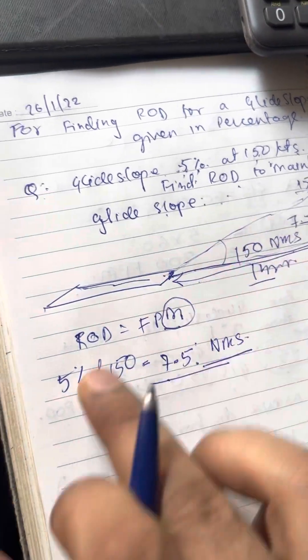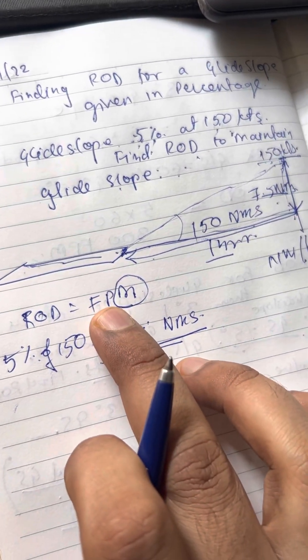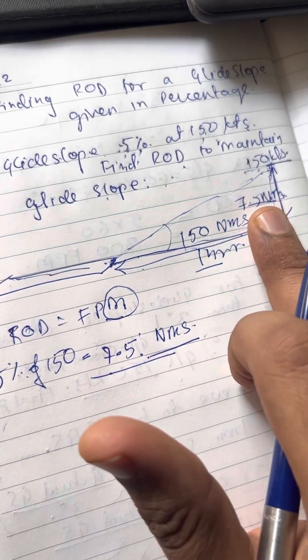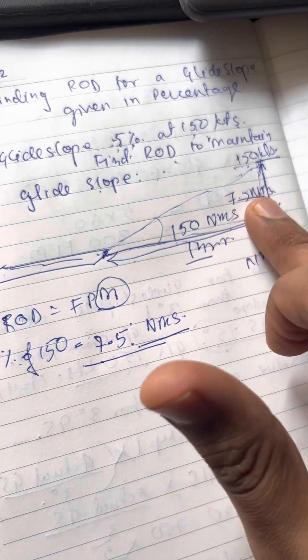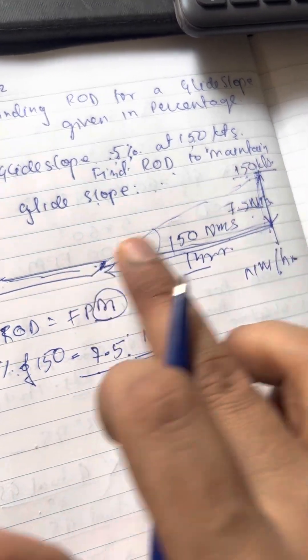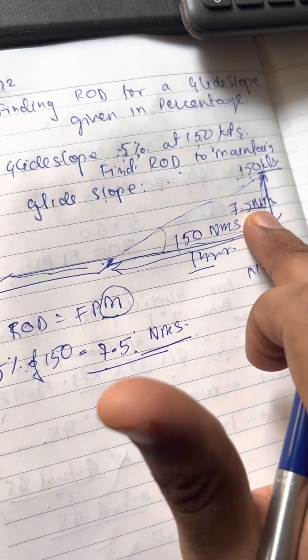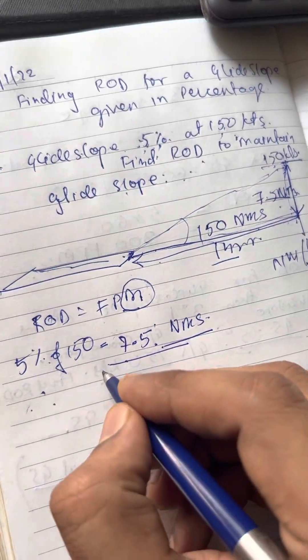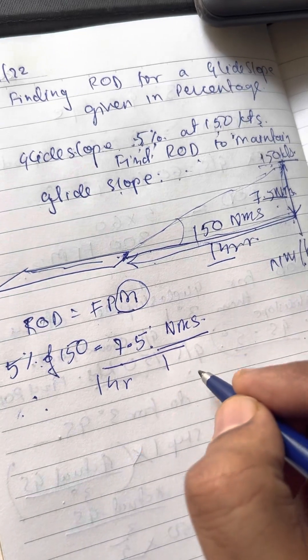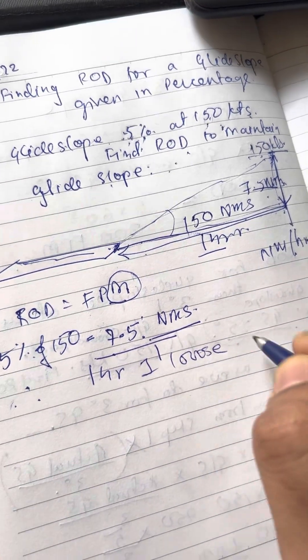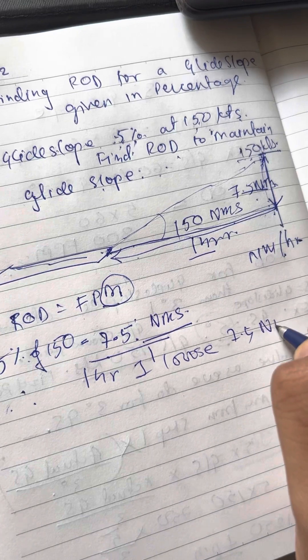Now, my rate of descent has to be in feet per minute. Okay? So 7.5 nautical miles, it's actually nautical miles and that is per hour. So here in one hour, I am losing, therefore with respect to this, one hour, I lose 7.5 nautical miles.